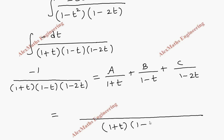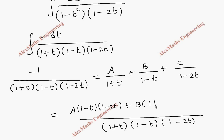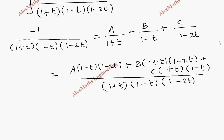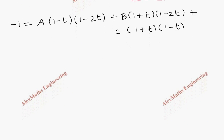Taking LCM as the product of all denominators — (1 plus t)(1 minus t)(1 minus 2t) — we get: A(1 minus t)(1 minus 2t) plus B(1 plus t)(1 minus 2t) plus C(1 plus t)(1 minus t). Since both sides have the same denominator, we equate the numerators: minus 1 equals this expression. Now we take suitable values of t to find constants A, B, and C.